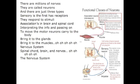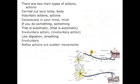The nervous system. There are two main types of actions that the body carries out. Voluntary actions are actions consciously controlled in your mind. If you do something that is automatic, those are involuntary actions, such as digesting and breathing.